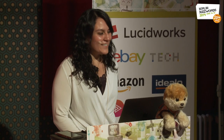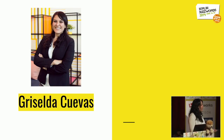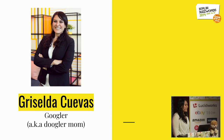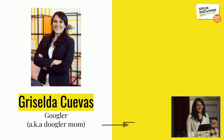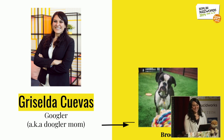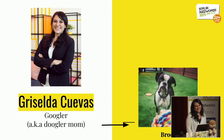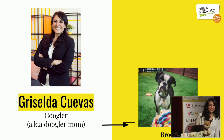Hi everyone. I'm going to start by telling you a little bit more about myself. My name is Griselda Cuevas — Gris for short. I am an open source strategist at Google, which makes me a Googler, which basically means that I am a Googler mom to this guy. His name is Brody, and he's a two-year-old boxer and he's my puppy. I am actually joined on stage also by Boo, who is another Googler with the little badge here.